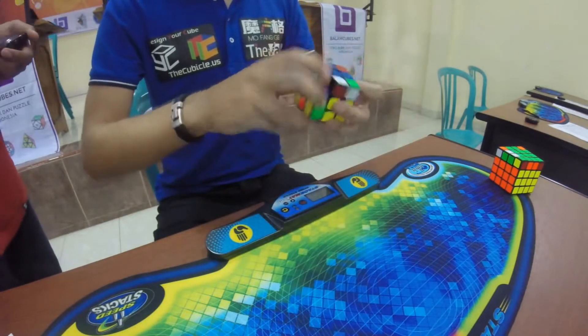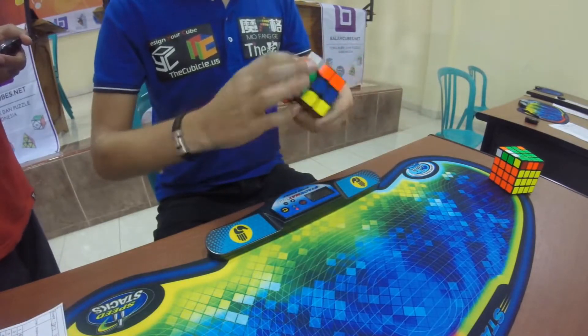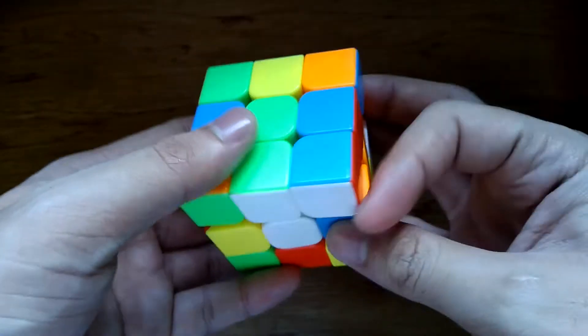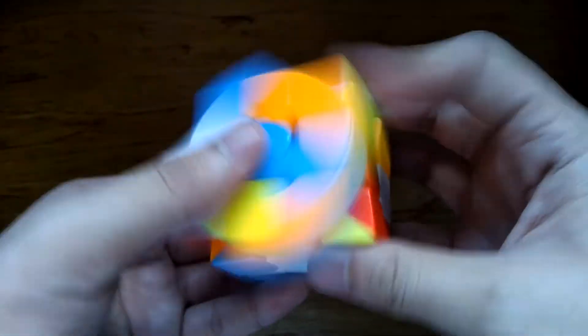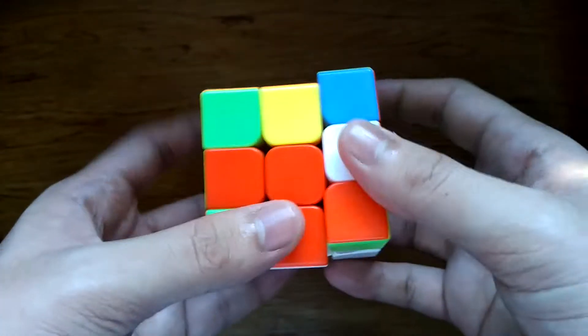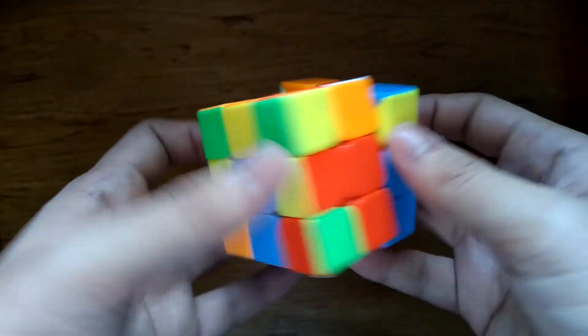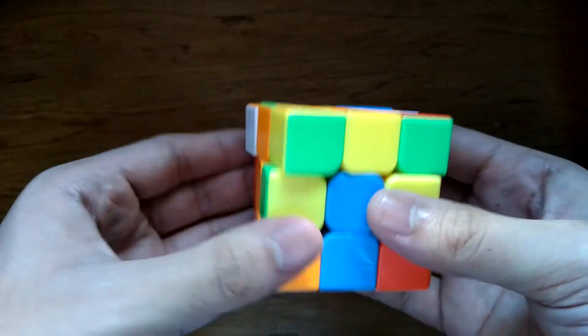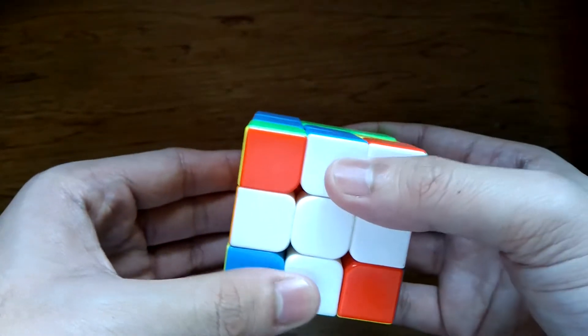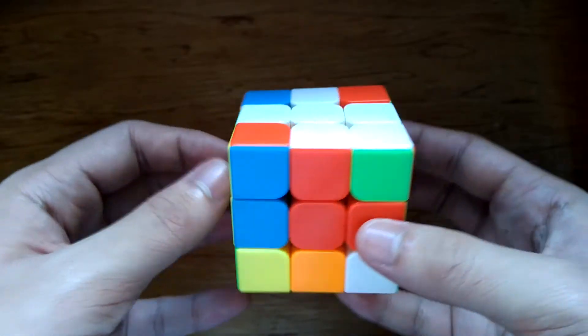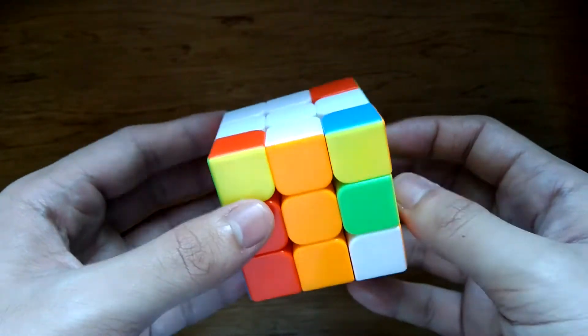CFOP is by far the most popular method the top cubers use. This first stage involves solving the four edge pieces in one outer layer of the puzzle, centering around a commonly colored center piece. Many speedcubers usually solve the cross on the bottom side to avoid cube rotations, which slow down solve times.